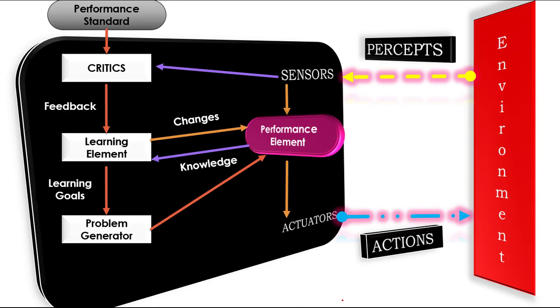The first component is the performance element, which is responsible for selecting external actions. This unit is similar to the intelligent agent types which we have already discussed in the previous section.